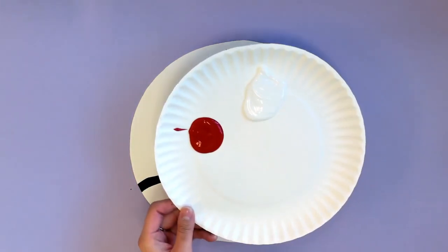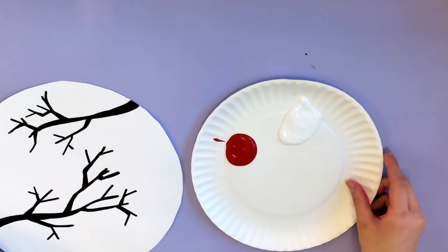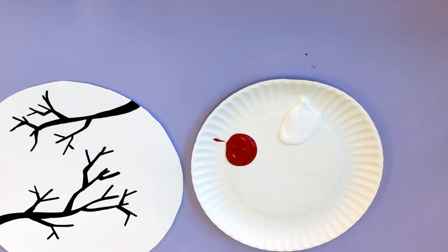Now that we're done with that, we're going to go ahead and get some red and white tempera paint. I put mine on a paper plate so it's easy to clean up later. We're going to be mixing these two colors to make our cherry blossoms.